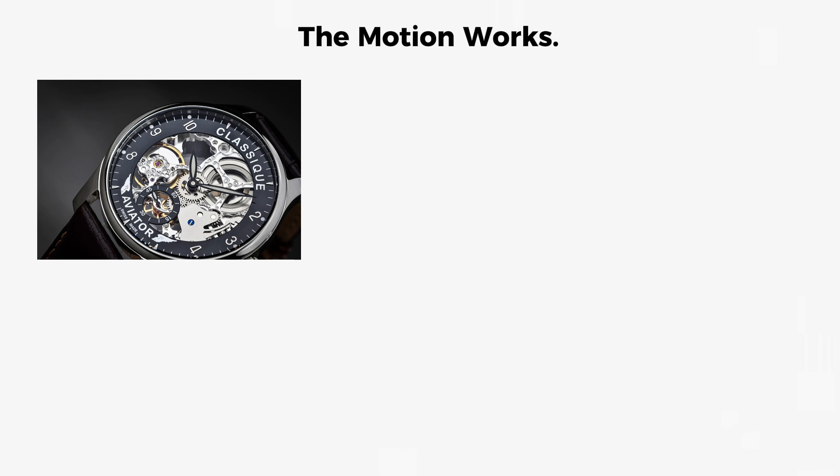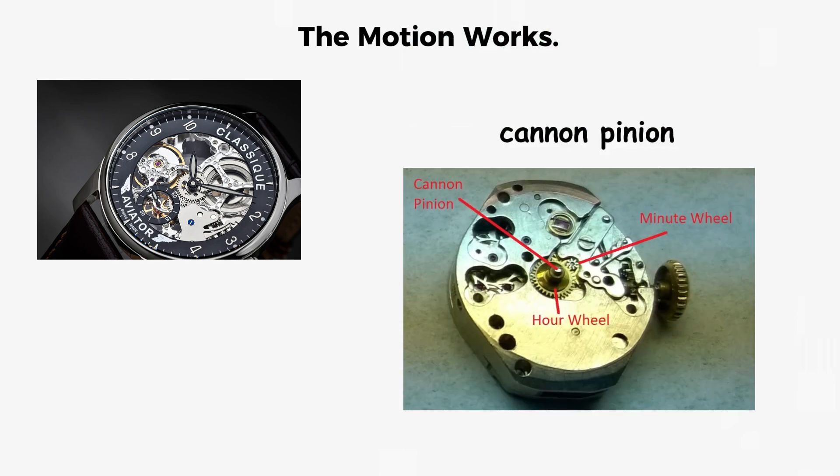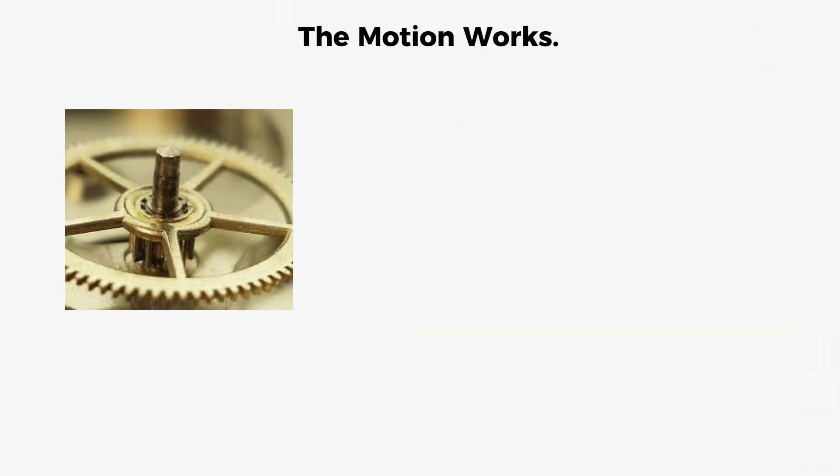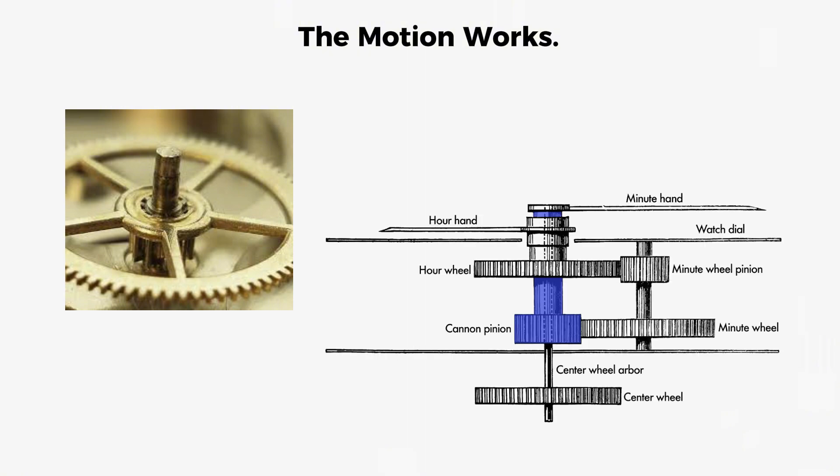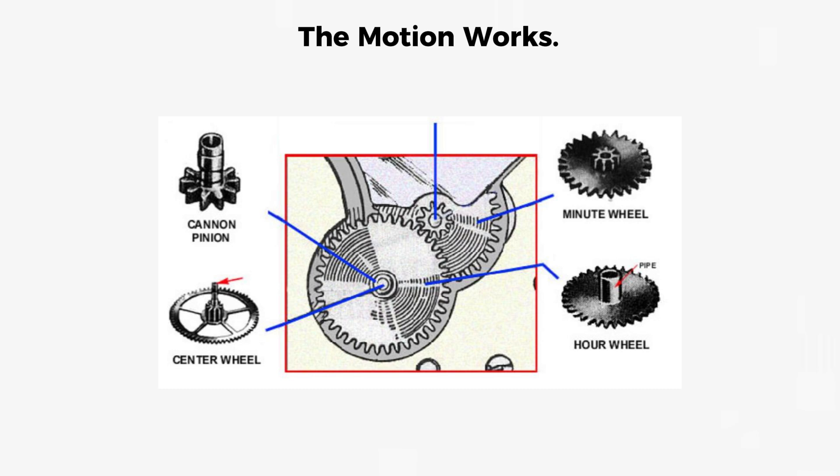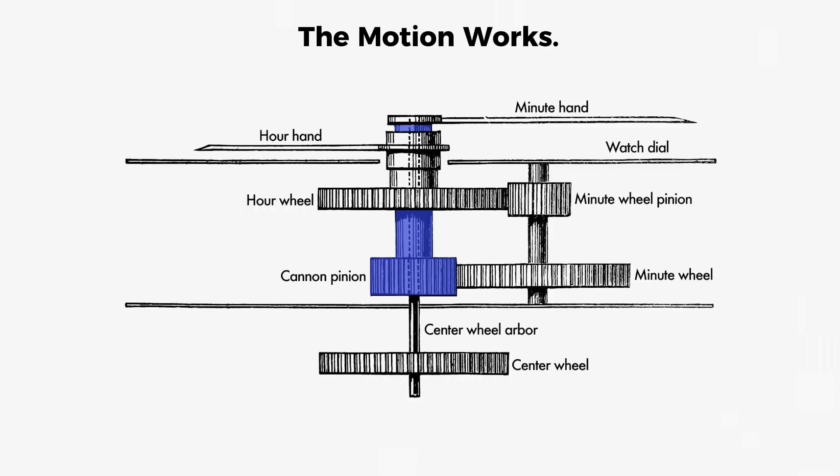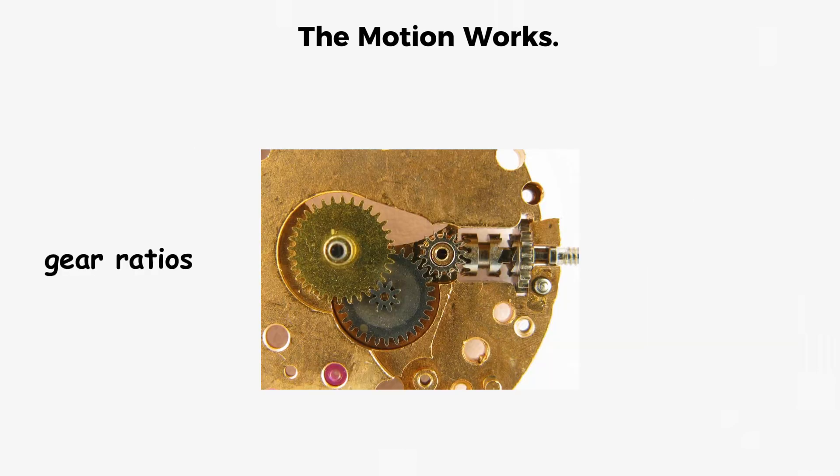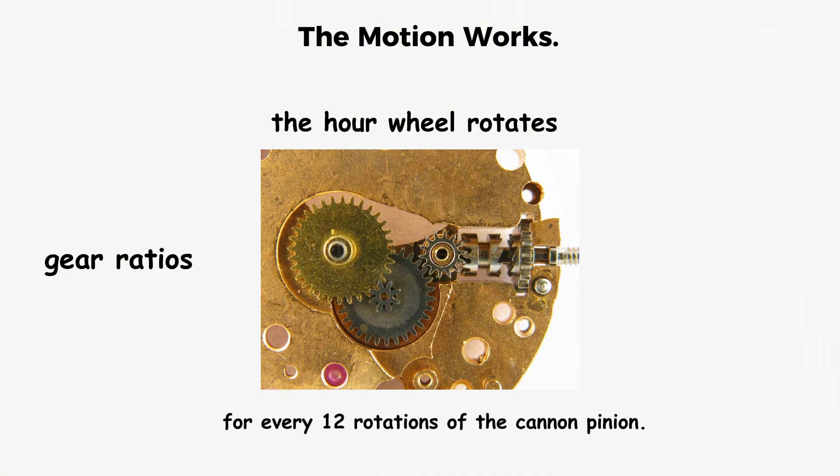This speed reduction happens as power flows from the cannon pinion through the minute wheel to the hour wheel. The cannon pinion is a hollow tube that fits over the center wheel arbor and is driven by friction. The minute wheel is an intermediate gear that bridges the connection between the cannon pinion and the hour wheel. The hour wheel is another hollow tube that fits over the cannon pinion shaft and holds the hour hand. Through precise gear ratios, the hour wheel rotates once for every 12 rotations of the cannon pinion.